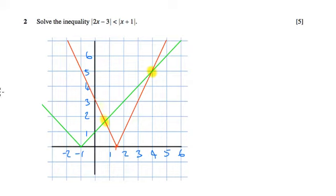Let's write down what the name of each of these lines are. This red line here is the normal 2x minus 3, and this red line here is the negative version because it flipped over when it went negative, so negative 2x plus 3.